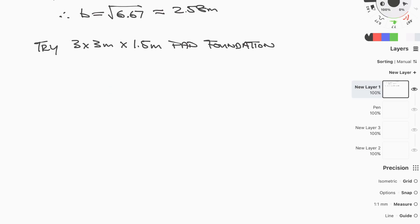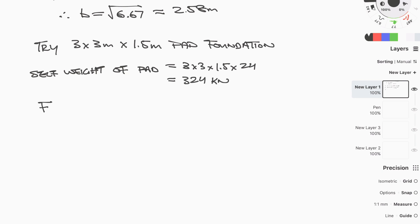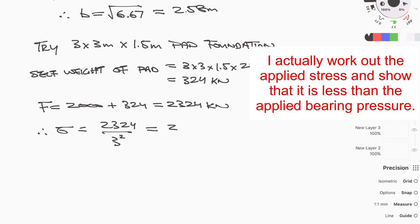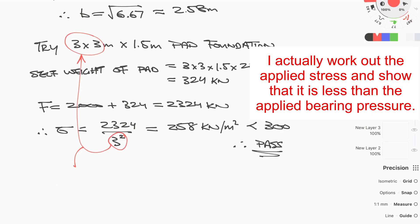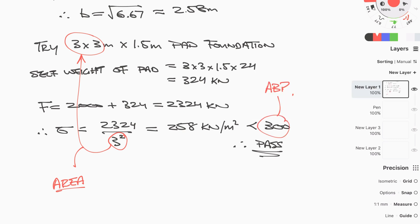The planned dimensions are 3 m × 3 m with a depth of 1.5 m. The self-weight of the pad is 3 × 3 × 1.5 × 24 kN/m³ = 324 kN. Adding this to the column load of 2000 kN gives 2324 kN total. Repeating the calculation: 2324 ÷ 300 = 7.75 m², √7.75 = 2.78 meters. Since we are providing 3 meters — greater than 2.78 m — the 3 m × 3 m × 1.5 m pad foundation works for this load and ground condition.